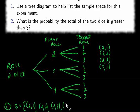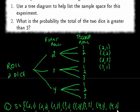three, one, three, two, three, three, four, one, four, two, and four, three. There are nine possible outcomes to this experiment.